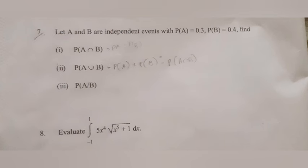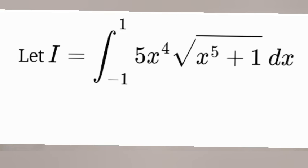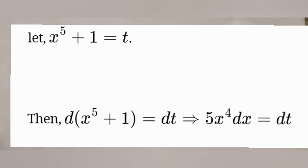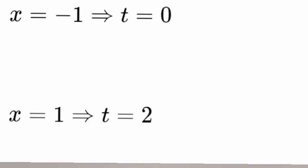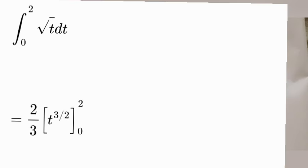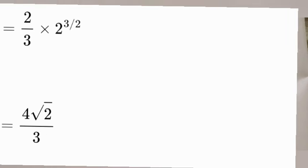Problem 8: Evaluate ∫₋₁¹ 5x⁴ √(x⁵+1) dx. Let t = x⁵+1, then 5x⁴dx = dt. When x = -1, t = 0; when x = 1, t = 2. The integral becomes ∫₀² √t dt = [⅔ t^(3/2)]₀² = (2/3)(2^(3/2)) = 4√2/3.